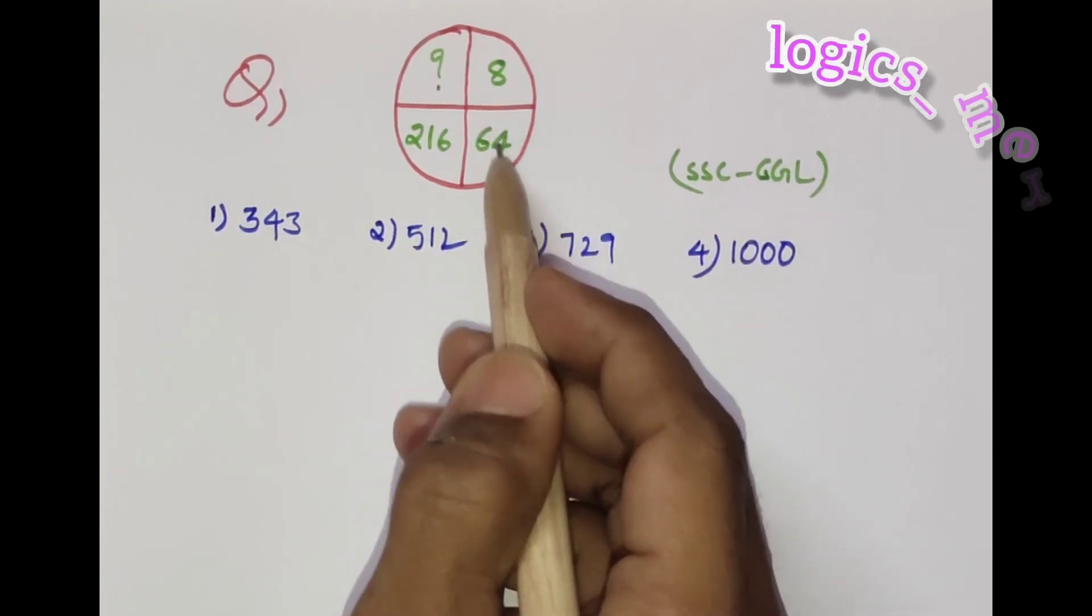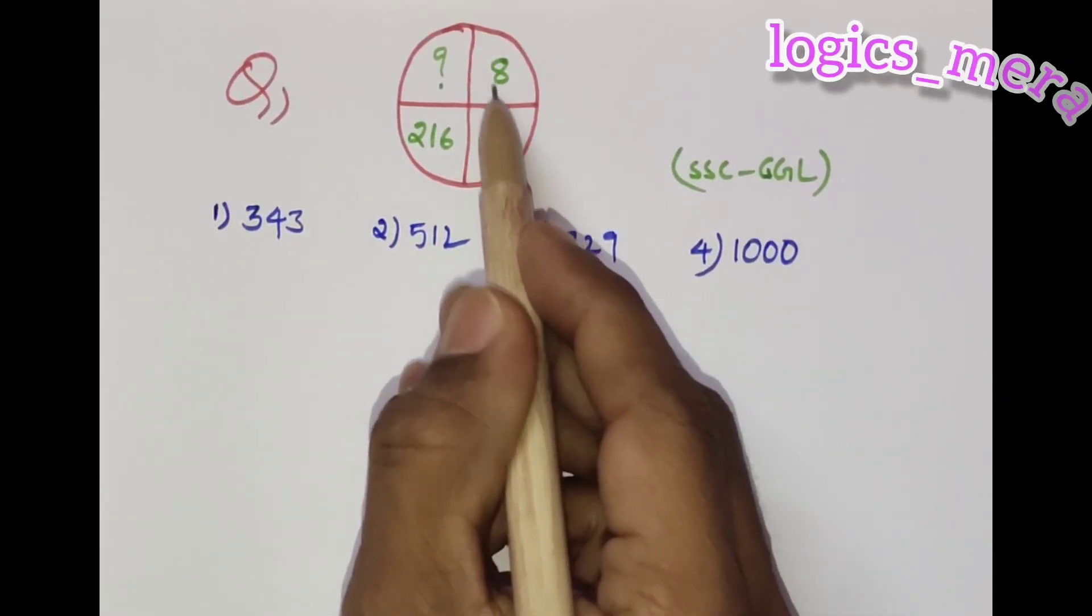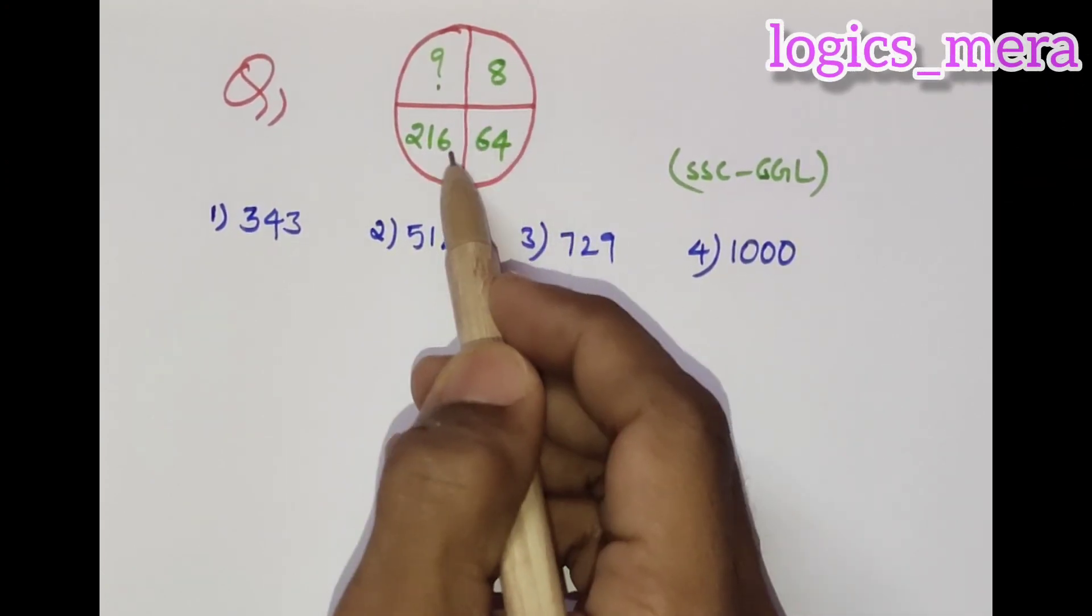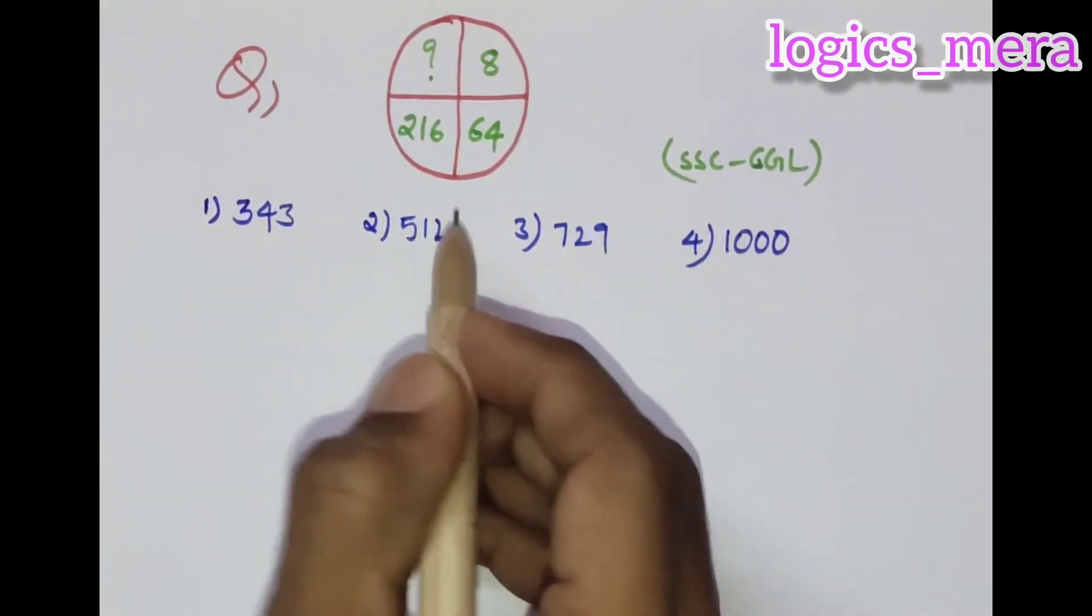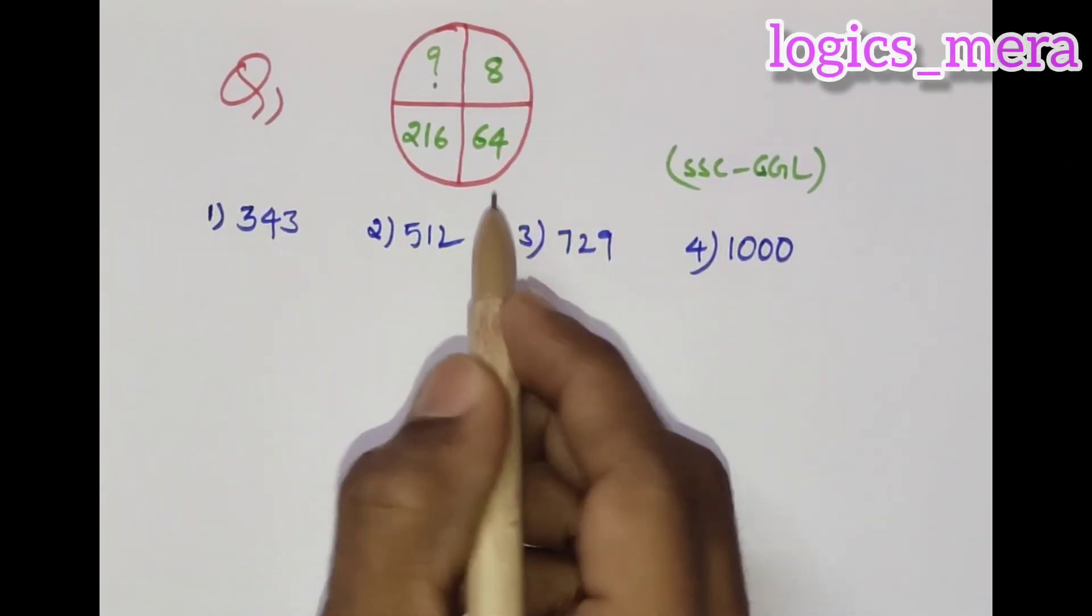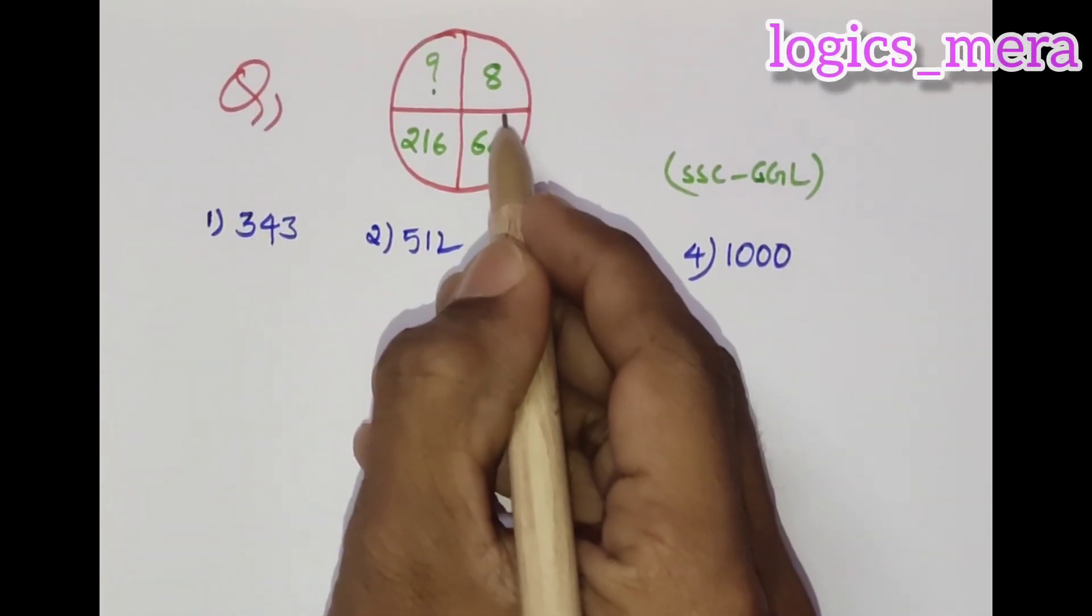To solve these types of questions, you need to know the exact relationship between the given three numbers. If you find out these three relationships, then you will get automatically the fourth number.